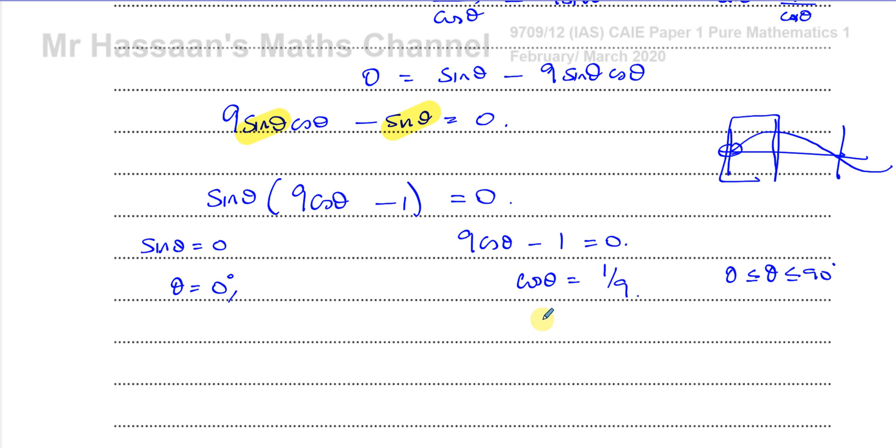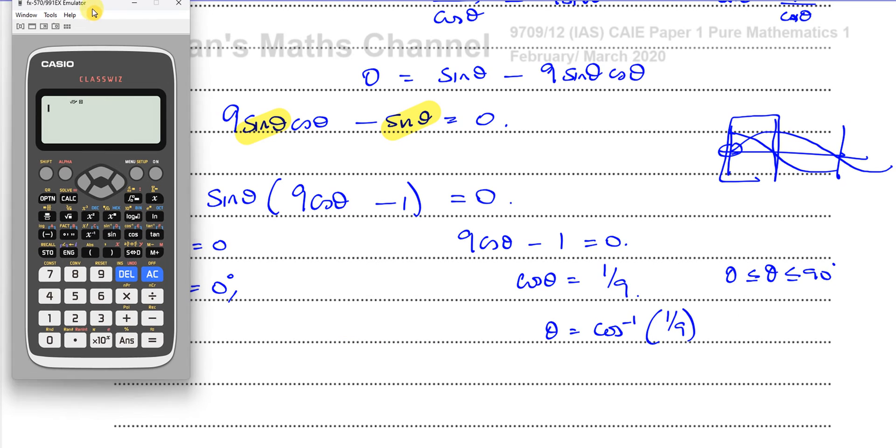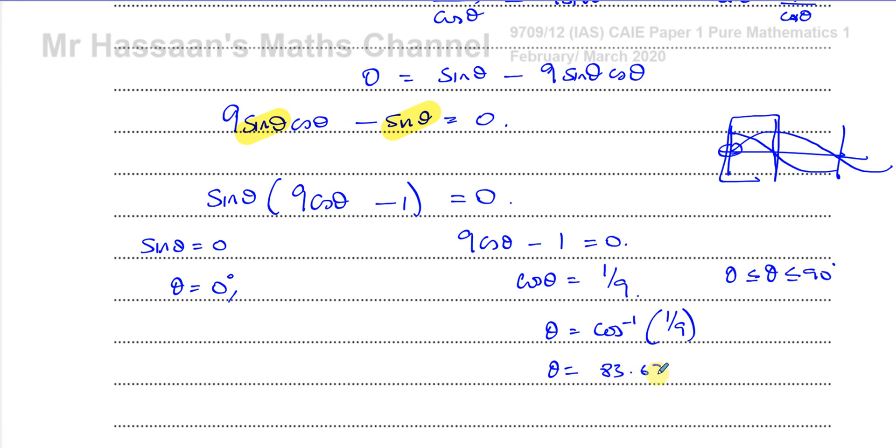Then we have cosine theta equals 1 over 9. So theta is equal to inverse cosine of 1 over 9. So the cosine curve goes like this. It hits 0 at 90, then it goes down like this to minus 1 at 180. So I can see that the answer is going to be somewhere between 0 and 90, where it's going to be 1 over 9. It's going to be positive. And that will be the only solution. So we can take our calculator and put, make sure it's in degree mode, inverse cosine of 1 over 9. And that gives us 83.620, or 621, sorry. Theta equals 83.621 degrees.